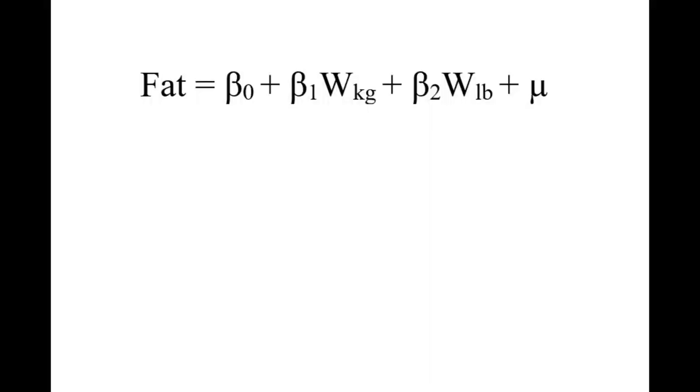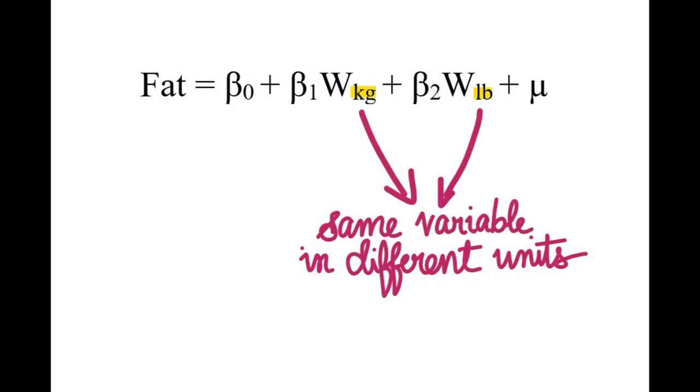The next cause of multicollinearity is including two identical or almost identical variables. For example, in this regression model, the explanatory variables are weight in kilograms and weight in pounds. Since they are the same variables but with different units, there will be multicollinearity if this model is used.